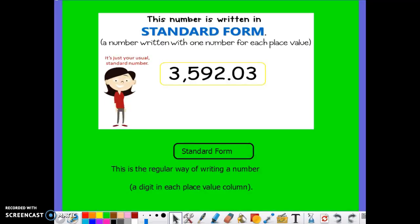Let's define each. Standard form is the number written all together. It's just the usual standard number. This is the regular way of writing a number, and each digit has one place value. For example, in the number 3,592 and 3 hundredths, the 2 is in the ones, the 9 in the tens, the 5 in the hundreds, and the 3 in the thousands.